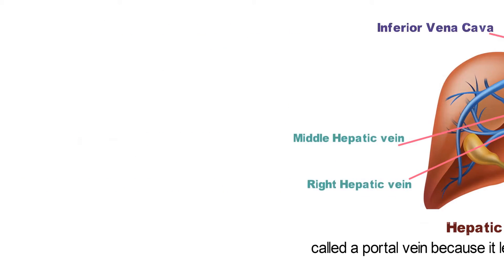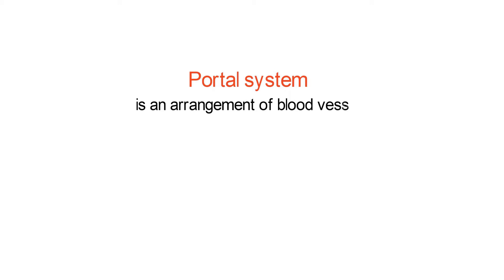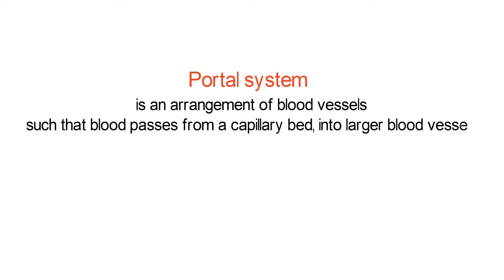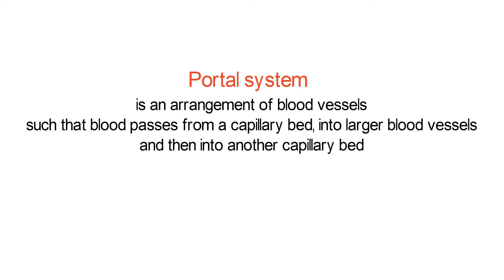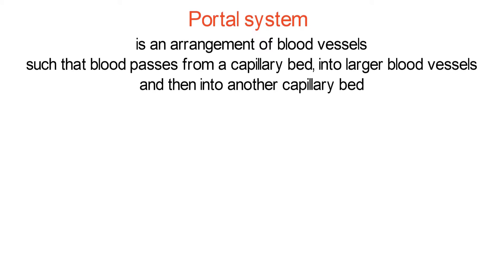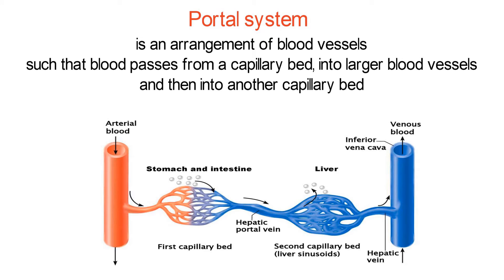Thus, before blood from the gastrointestinal tract reaches the inferior vena cava, the gastrointestinal blood passes through the liver. The hepatic portal vein is called a portal vein because it leads into the hepatic portal system. A portal system is an arrangement of blood vessels such that blood passes from a capillary bed into larger blood vessels and then into another capillary bed. In the case of the liver, the two different capillary beds are the capillaries of the gastrointestinal tract and the capillaries in the liver.